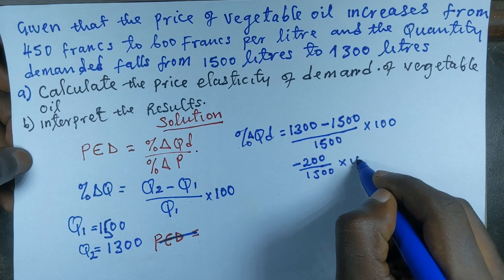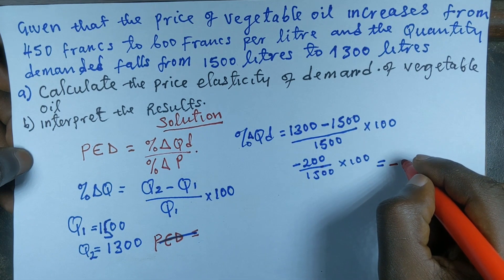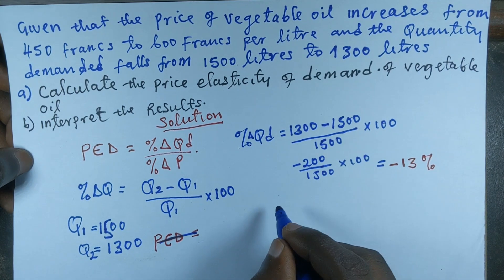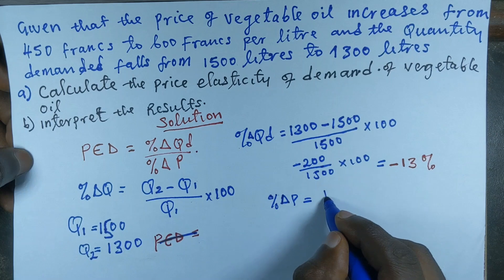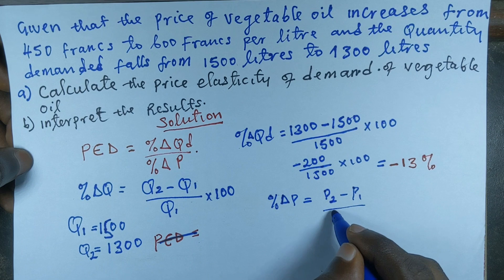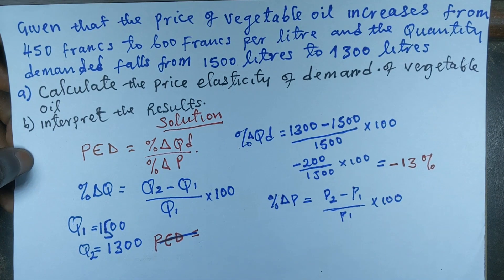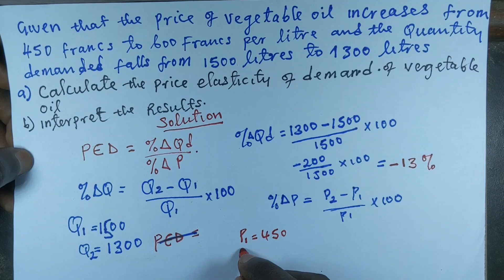Multiplied by 100, our answer is minus 13 percent. Now let's look for the percentage change in price. The percentage change in price is equal to P2 minus P1, all divided by P1, times 100. So P1 is the initial price, which was 450 francs, and P2 is equal to 600 francs.